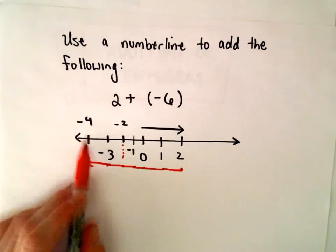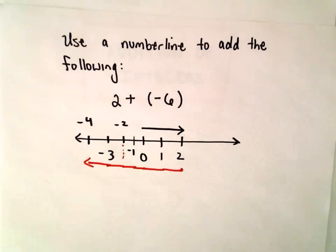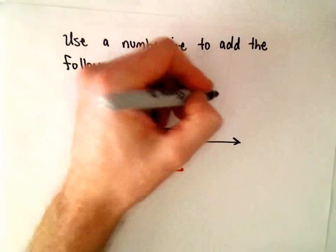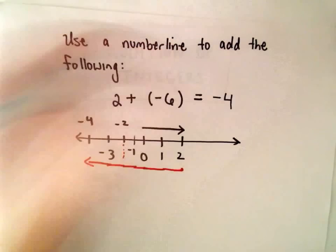Well, it looks like we end up finishing out at negative 4, and that's going to be our solution. 2 plus a negative 6 is going to give us negative 4.